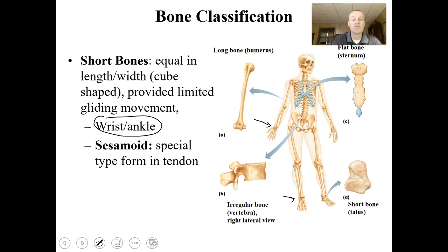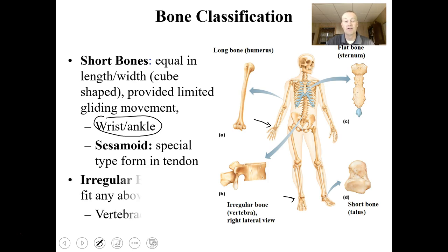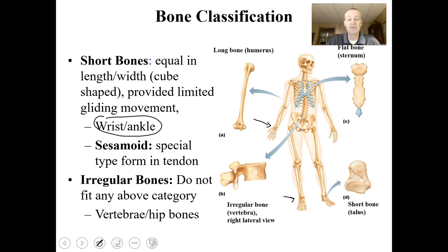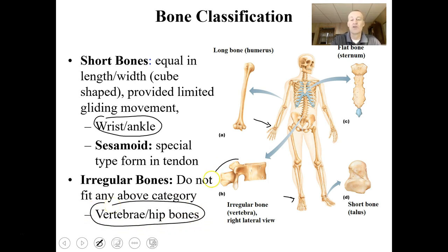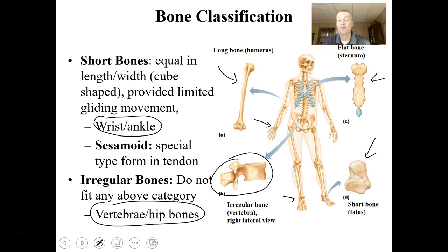We also have sesamoid bones, which are bones that form within tendons. Then we have irregular bones that don't fit any category described before — they're irregularly shaped, and examples would be your vertebrae and hip bones. Here you can see a vertebra as an irregular bone, the humerus as a long bone, the sternum representing a flat bone, and the talus as one of the ankle bones considered a short bone.